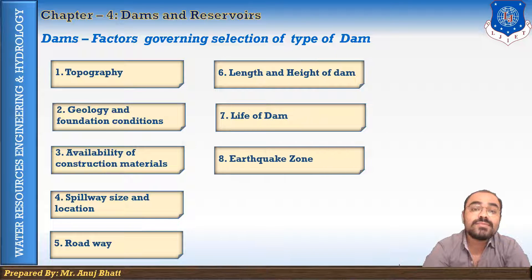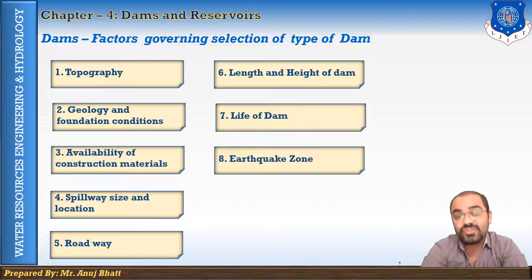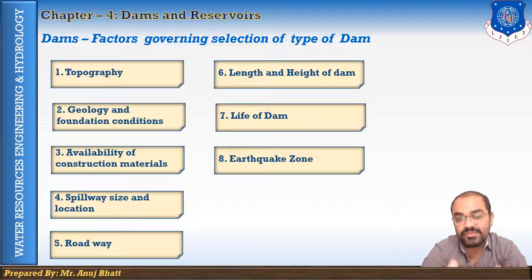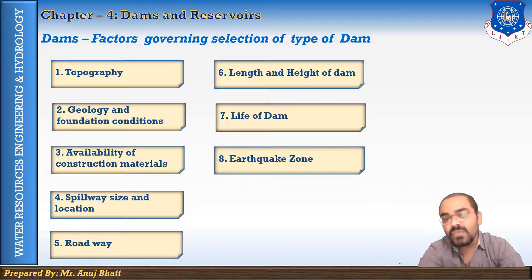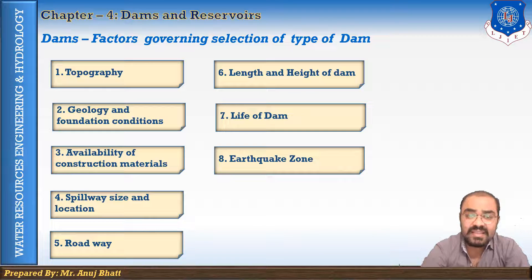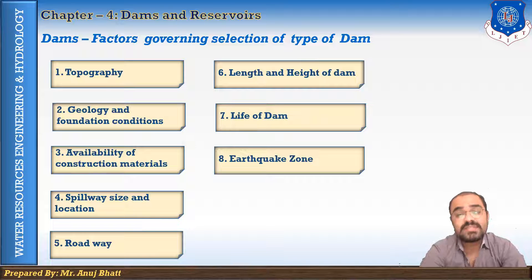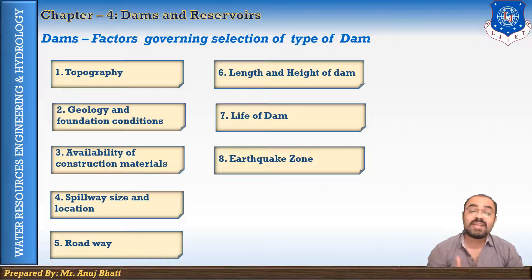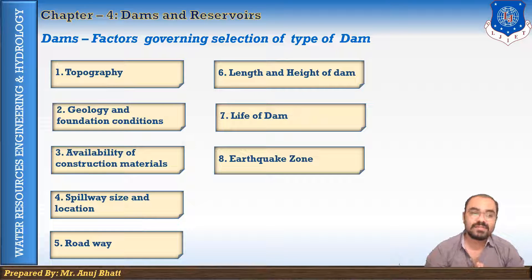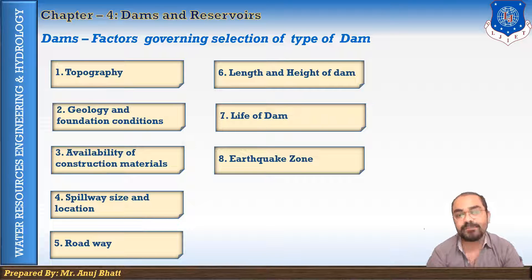The next factor is the earthquake zone. After the 2001 earthquake, this is the most important consideration when constructing any structure. The earthquake zone must be determined as it also affects the type of dam. If a dam is constructed in an area subject to earthquake shocks, the type selected should be able to resist those shocks without causing damage. Normally, earth dams and concrete gravity dams are preferred in earthquake-prone areas because they have heavy stability and give better strength to resist earthquake shocks.